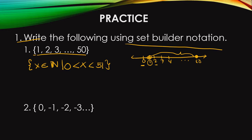Likewise with 51 — we want to reach up to 51. That's why it's greater than the element, so 51 is not included. We stop at 50. But if you want to include 1 or 50, we also have another method or another way of writing.